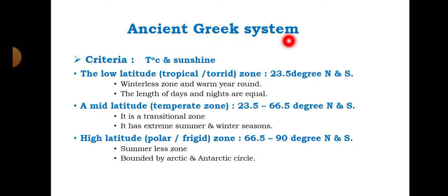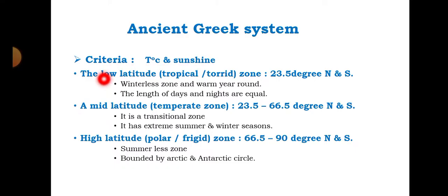The ancient Greek system uses two criteria for its classification: temperature and sunshine. According to the ancient Greek system, world climate is classified into three groups: the low latitude tropical zone, the mid latitude temperate zone, and the high latitude polar or frigid zone.